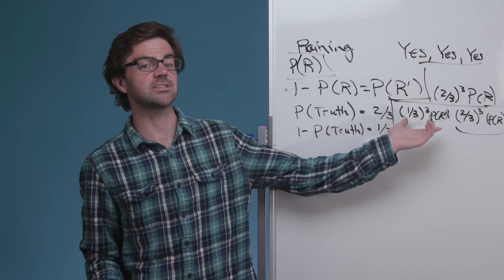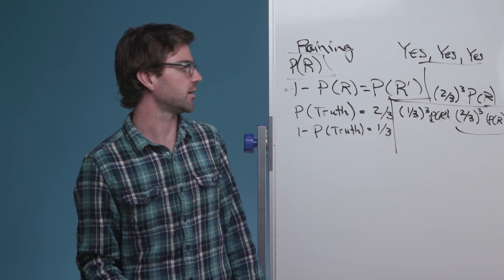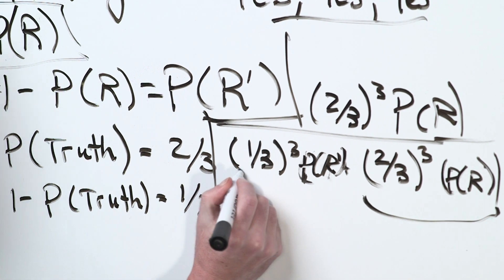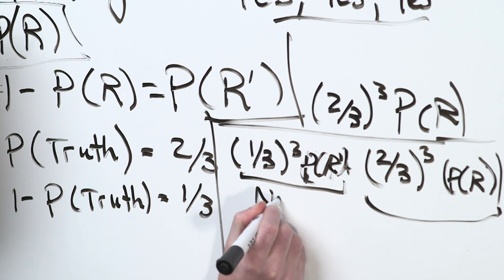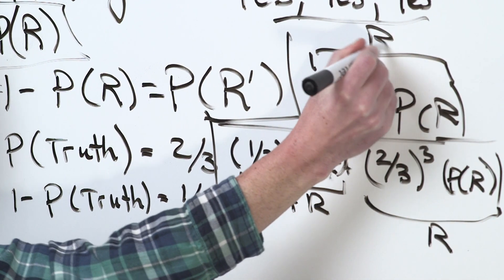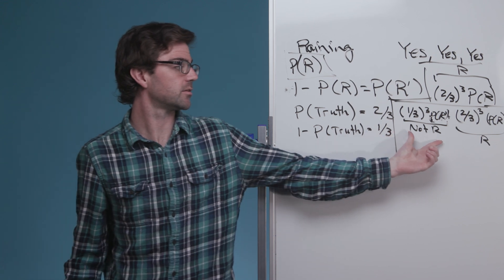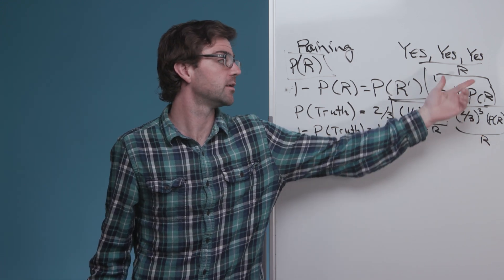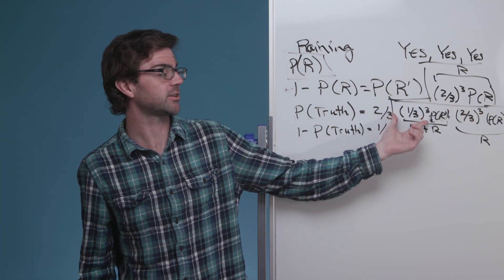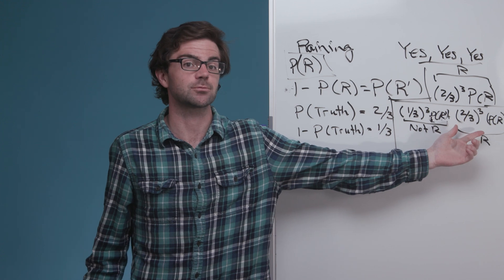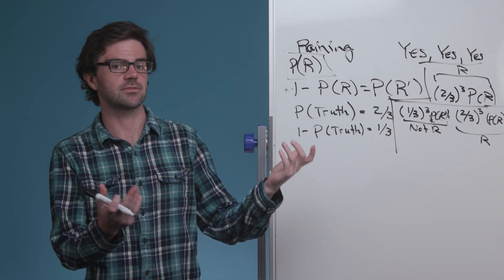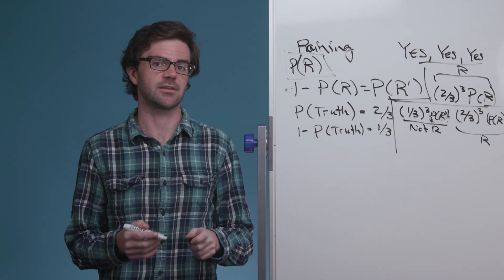You can see this has Bayes' rule in it, divided into three components. This is the not-raining component associated with yes/yes/yes, and this is the raining component associated with yes/yes/yes. That's the final answer to this interview question.